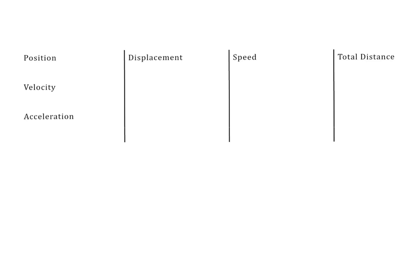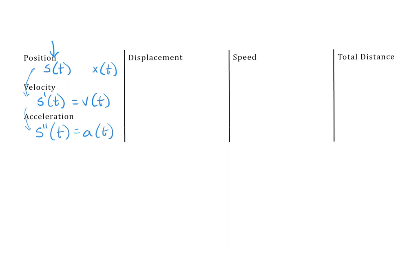In today's lesson we are looking at position, velocity, and acceleration of functions. It's kind of a review going back to Unit 4, but we're going to bring in the idea of integration. If you remember, we started with a position function s of t — sometimes written as x of t — then velocity is s prime of t, the same as v of t, and acceleration is the double prime. First we would take derivatives to go in that direction.